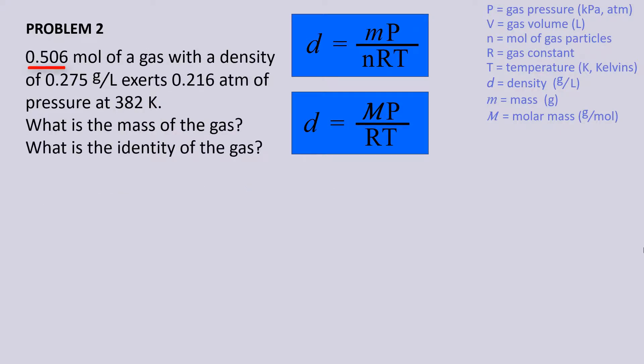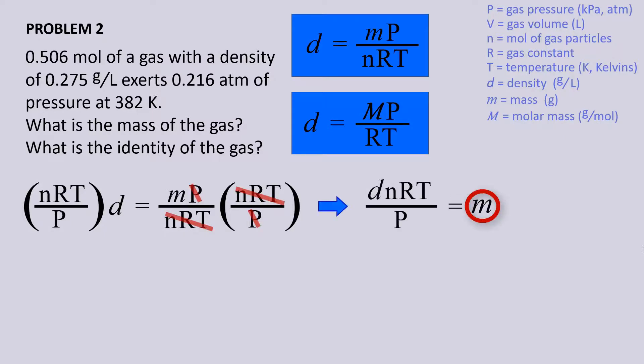Last problem. Here we are given moles, density, pressure, and temperature. The question is asking for mass, so we will use the first equation. Let's rearrange the equation to isolate mass, and then plug in the given values. If we multiply both sides by nRT over P, then nRT and P cancel on the right, leaving mass by itself.